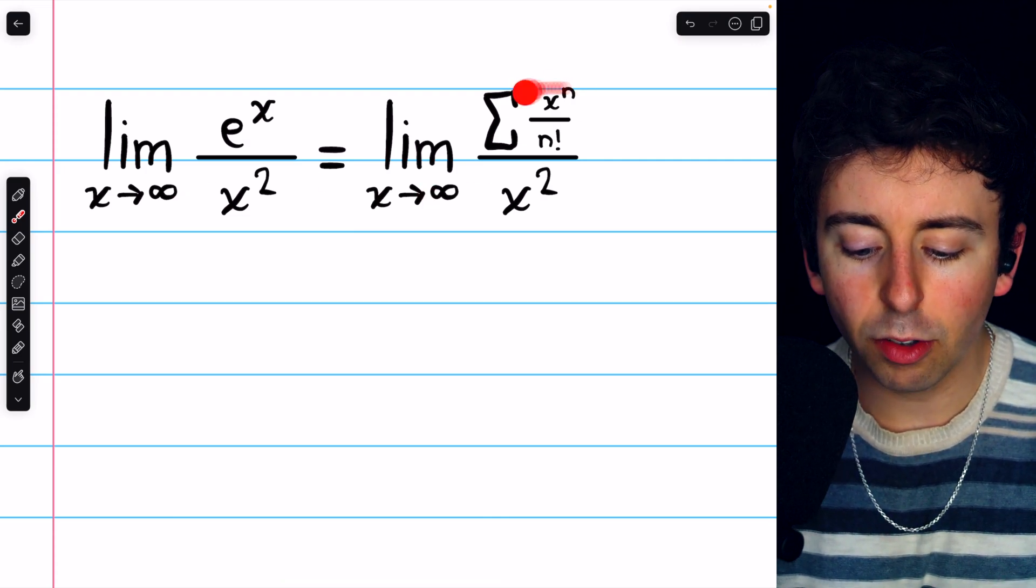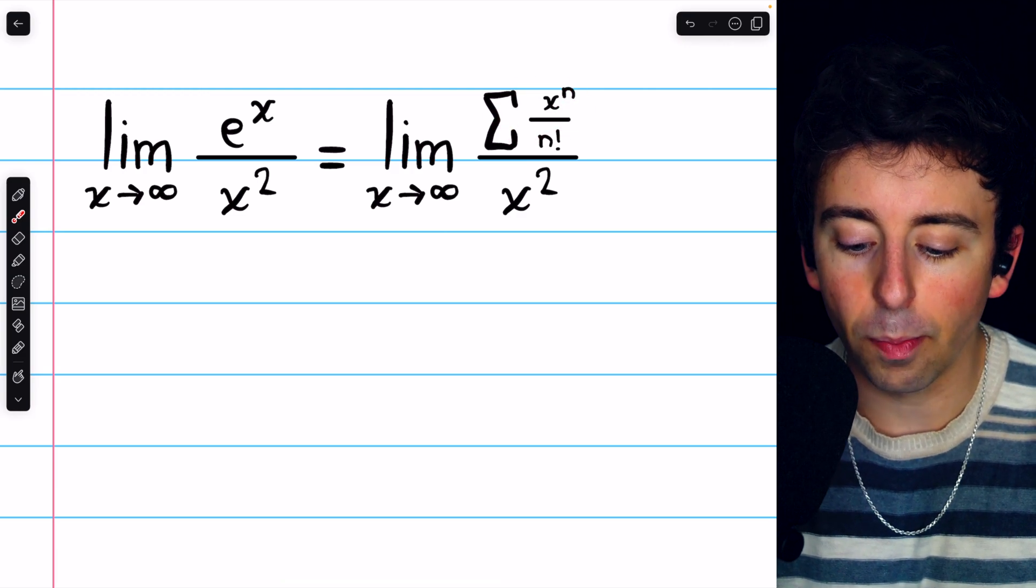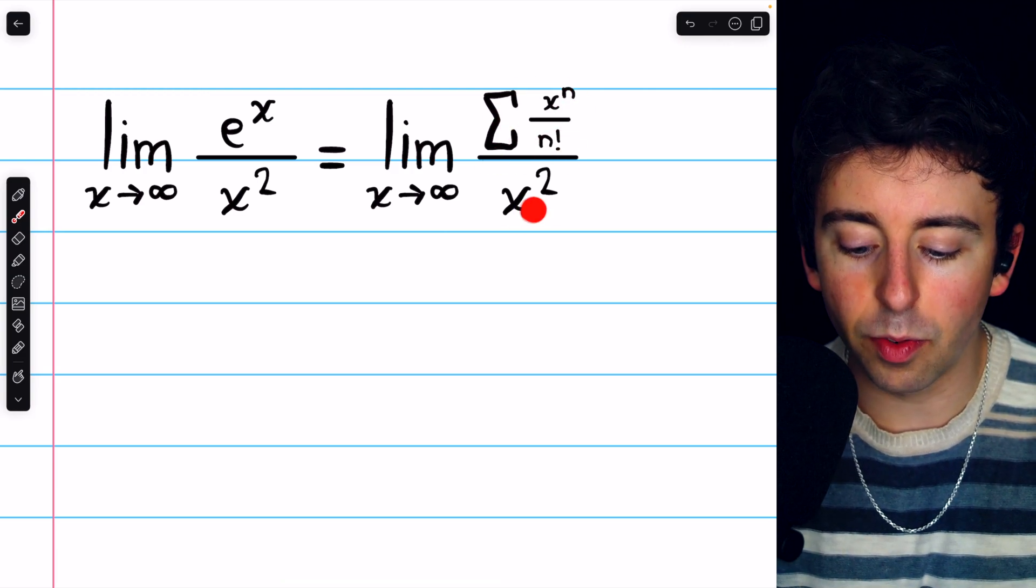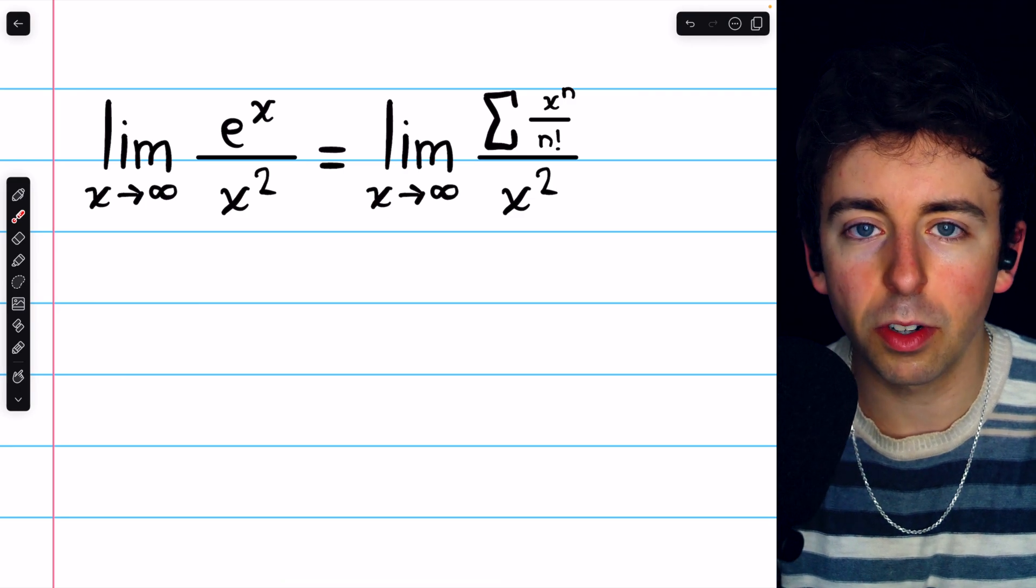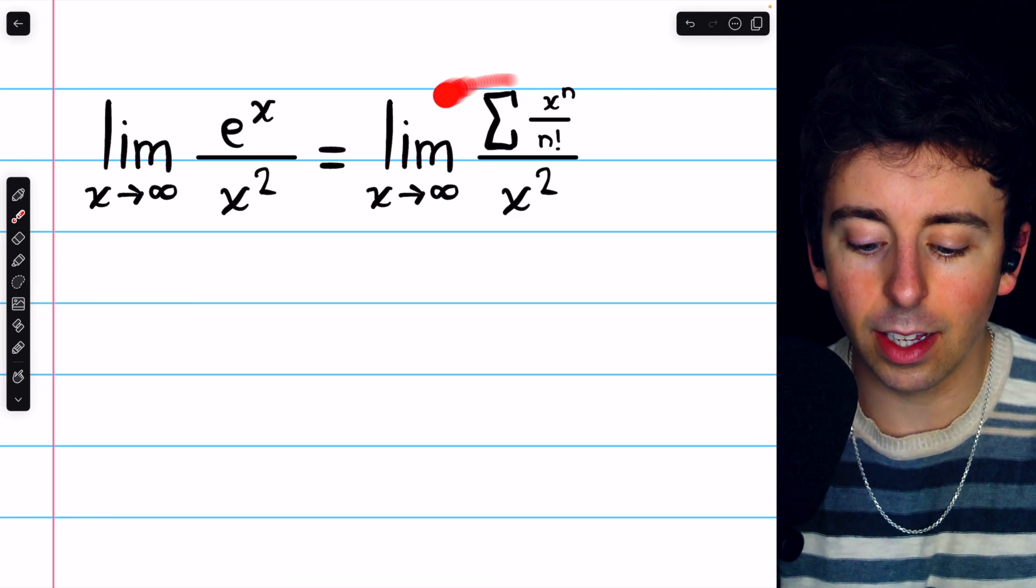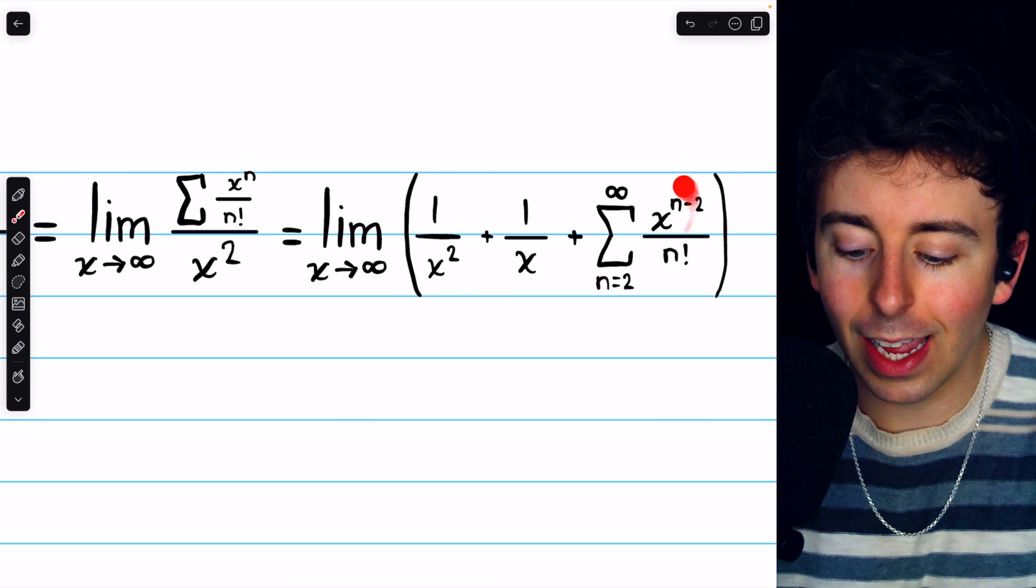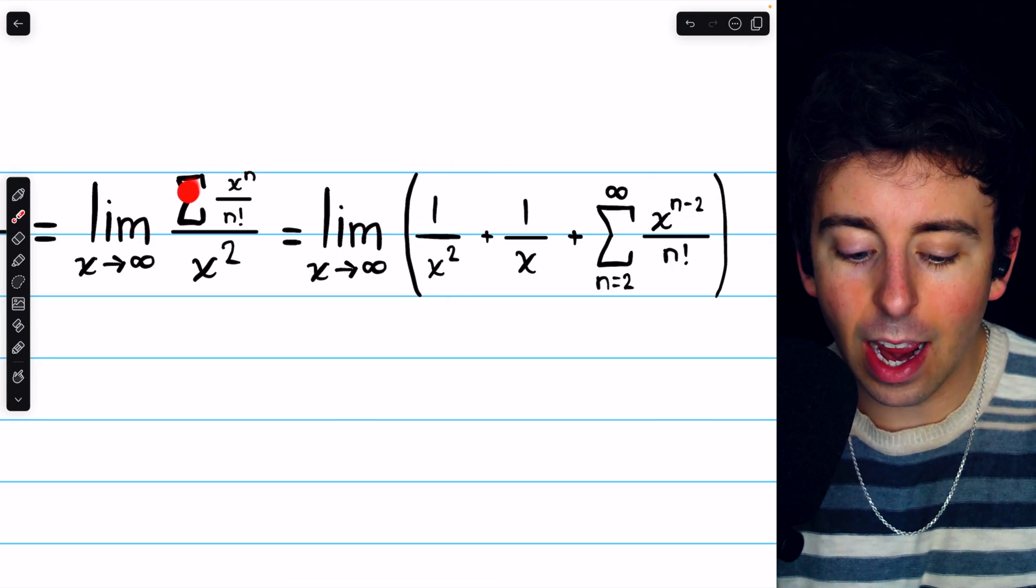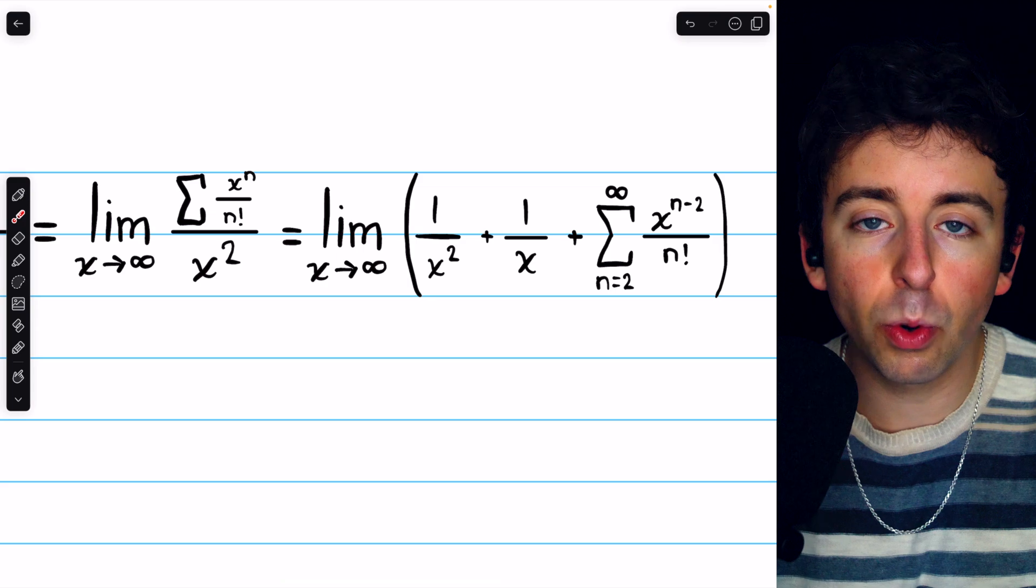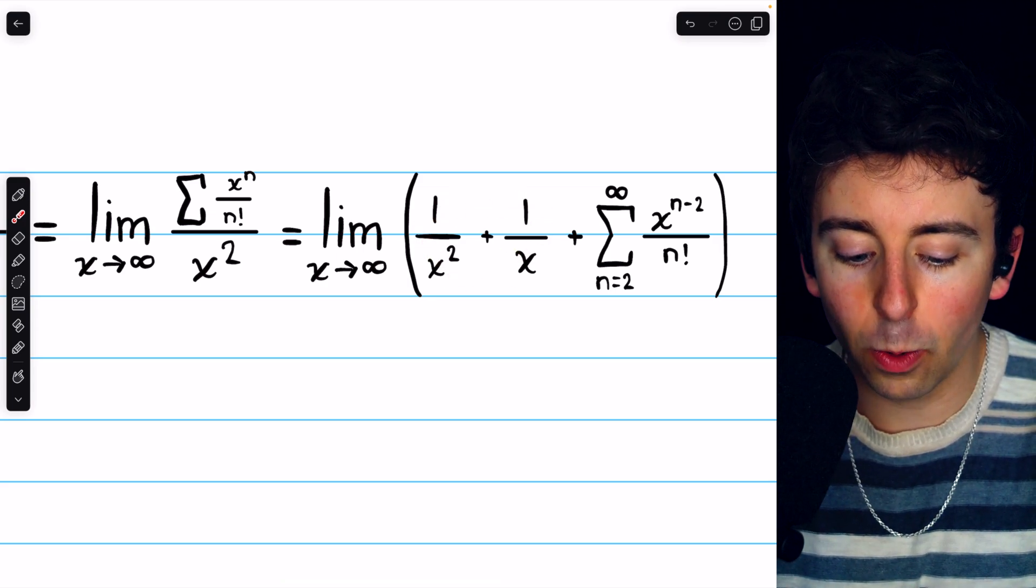But then we can split up this series a little bit and consider how this division of x squared interacts with those terms to get a clear idea of the behavior of this limit. In particular, we may rewrite it like this, where I've divided every term in the series by x squared and taken the first two out.